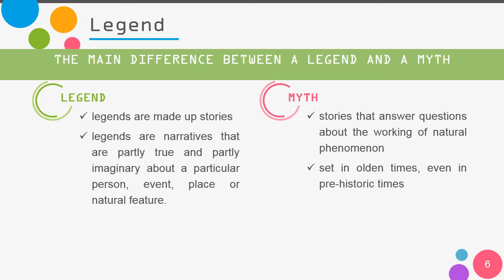A myth is a story that answers questions about the workings of natural phenomena. Kalau mitos itu cerita yang menjawab pertanyaan tentang fenomena alam tertentu. Contohnya, mitos tentang pelangi: pada zaman dahulu, orang berpikir pelangi adalah selendangnya bidadari yang sedang mandi. Padahal pelangi adalah fenomena alam yang bisa dibuktikan secara ilmiah.